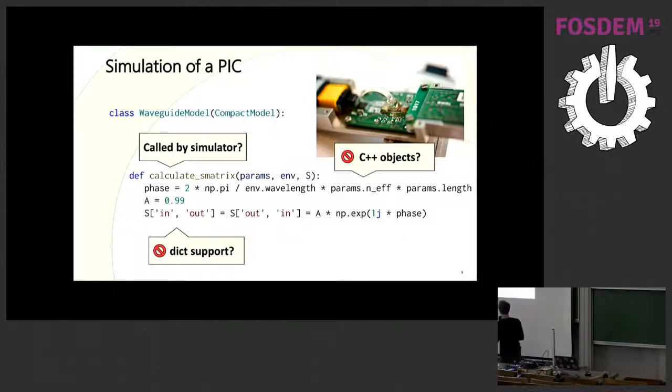You see already some problems here. This Calculate S matrix has to be called by our solver, which is written in C, C++. We have here a sort of dictionary-like structure. And we have some C++ objects that we want to use from our simulator. These are all things that are not directly supported by Numba. Dictionaries are not supported. In the latest version, there's some basic support for strings. But even there, it's limited. But luckily, you can extend Numba.